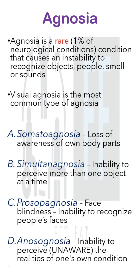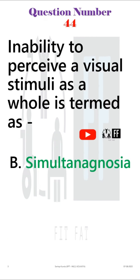The last option was anosognosia. It is the inability to perceive the realities of one's own condition. It is seen in dementia patients or traumatic brain injury patients where the patient is unaware of his or her condition. So the answer is option B, simultaneous agnosia.